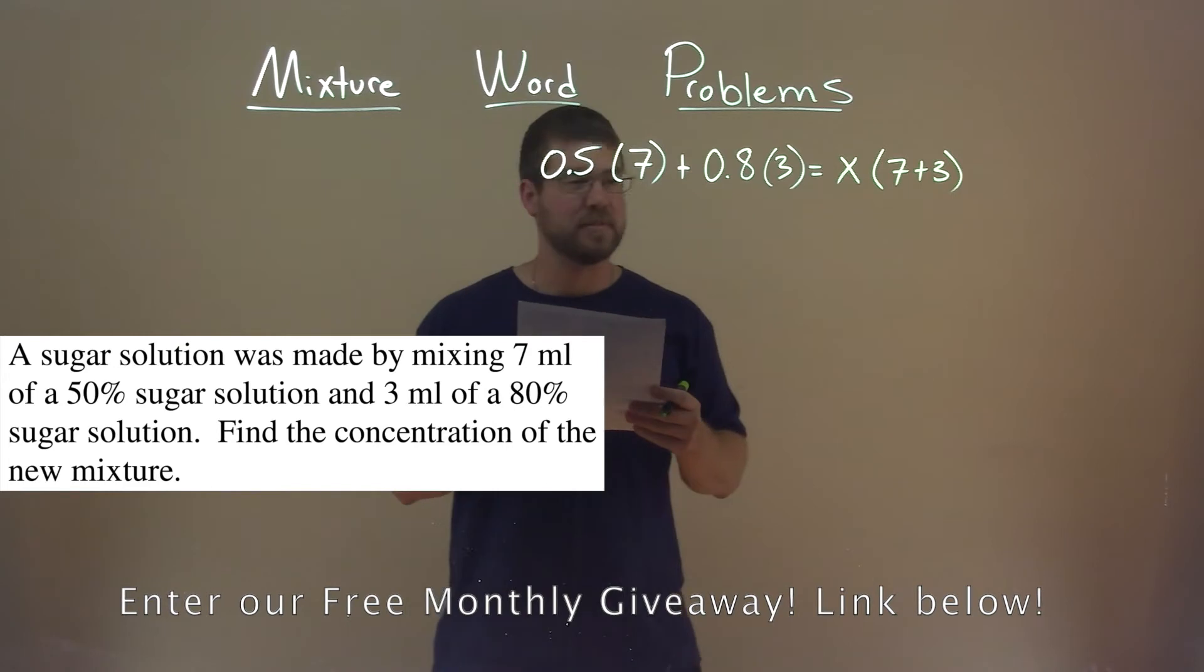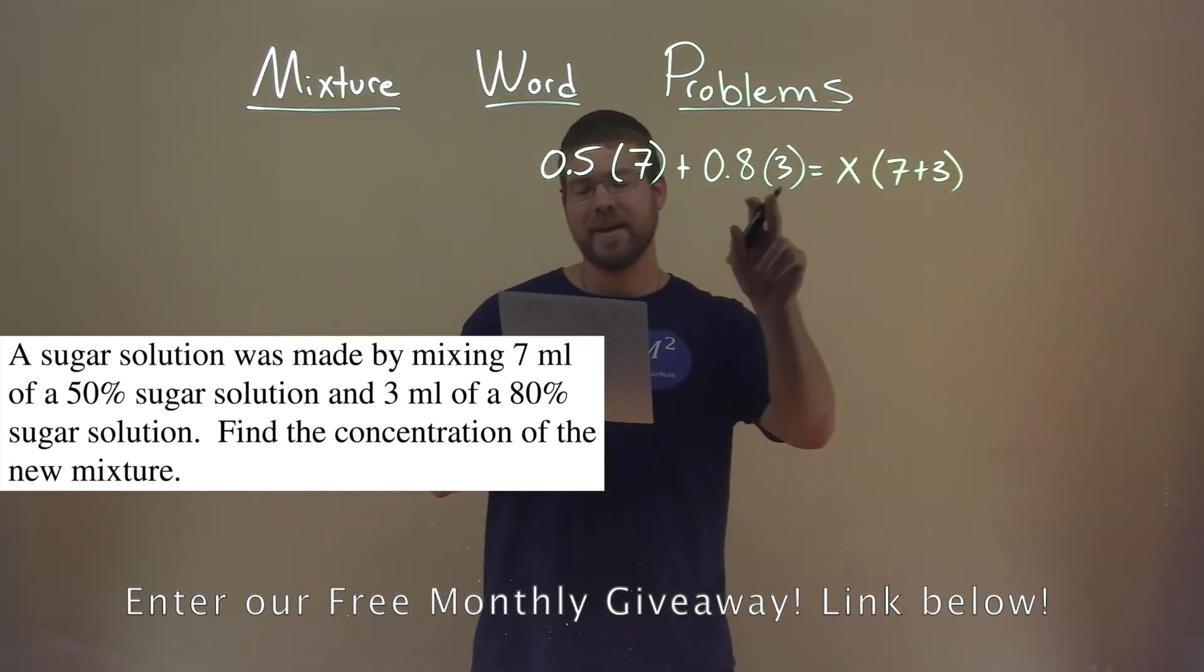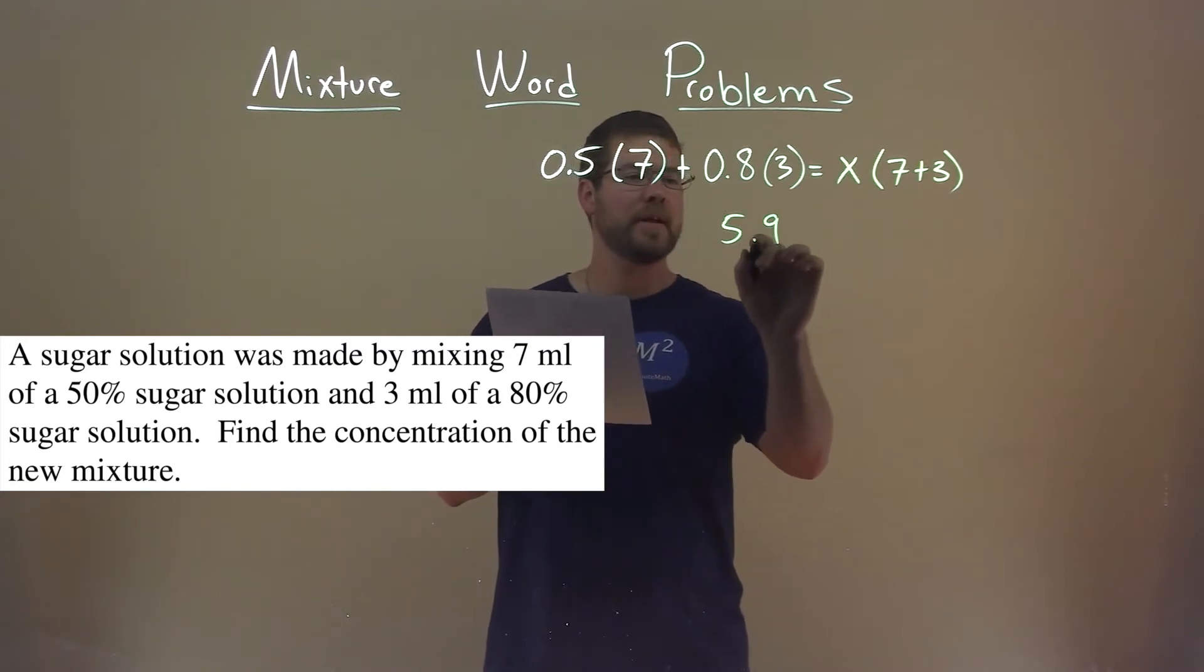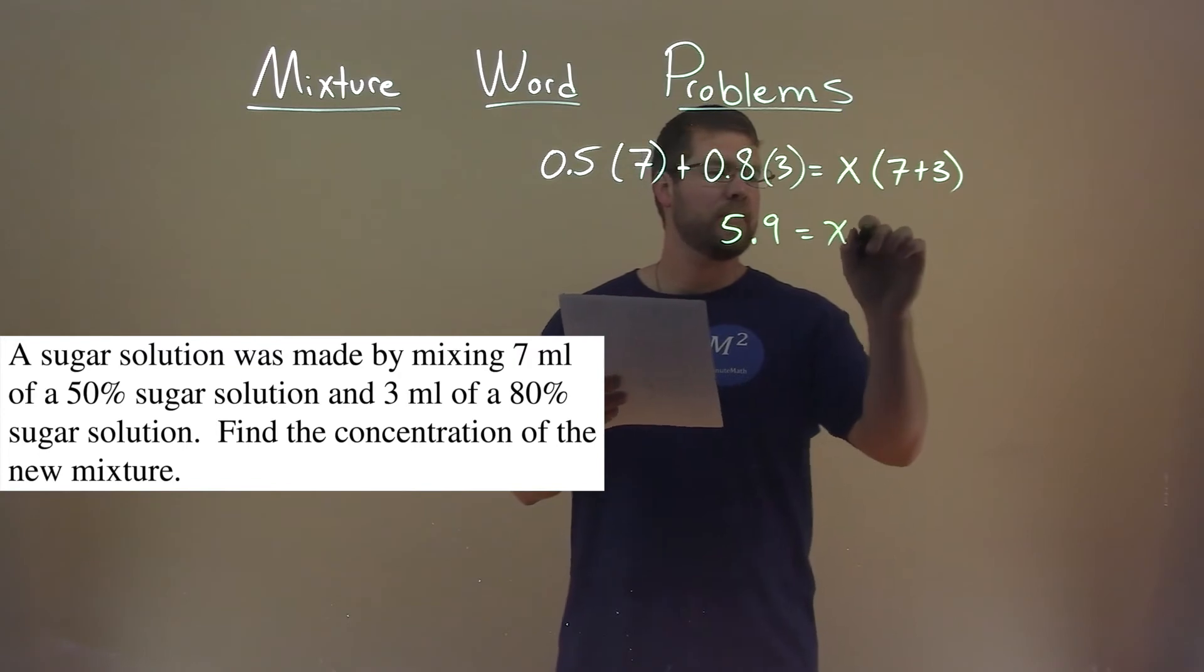And now we have to solve. 0.5 times 7 plus 0.8 times 3 is 5.9, and x is here, and 7 plus 3 is 10.